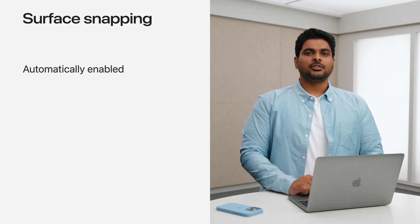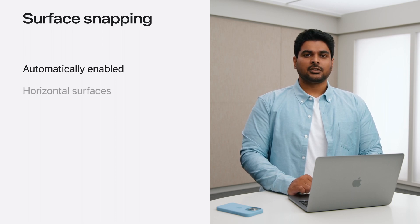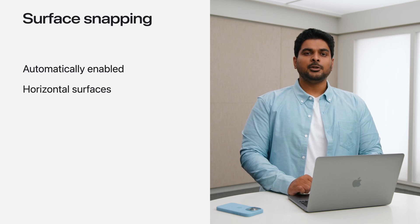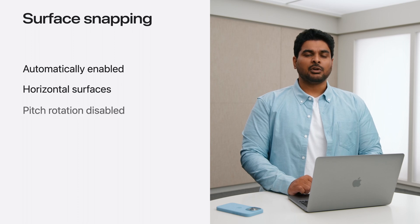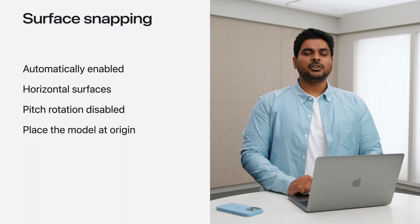Surface snapping is automatically enabled for all 3D models in QuickLook — there is no extra work needed. It is supported for horizontal surfaces, such as a table or the floor. To avoid the 3D model from intersecting with the surface, QuickLook disables pitch rotation while snapped. To make your 3D model appear as if it snapped onto a surface, ensure that the bottom of the model sits on the origin. And that's surface snapping in QuickLook.